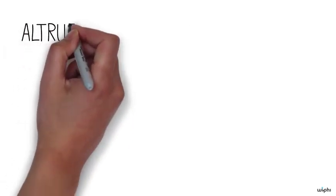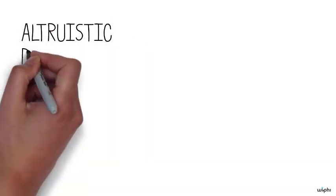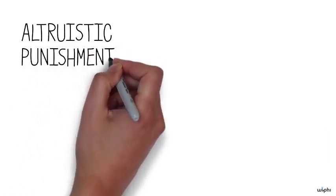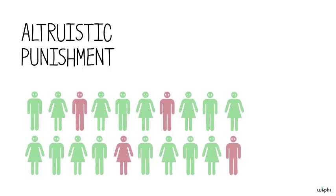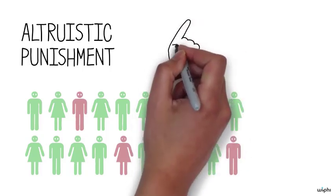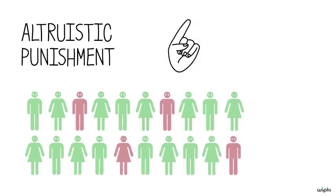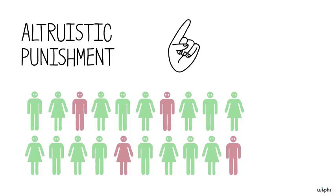One way to solve the assurance problem is by introducing altruistic punishment, which occurs when people are permitted to punish free riders. The prospect of altruistic punishment can help increase contributions to public goods especially well for small groups in which people can bear retribution for being identified as a free rider.